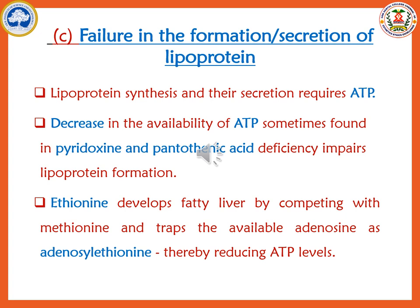Another reason for impaired VLDL synthesis is failure in lipoprotein formation or secretion. VLDL synthesis is an energy-dependent process requiring ATP. When ATP is deficient — mainly in conditions of pyridoxine and pantothenic acid deficiency — efficient VLDL cannot be produced, impairing lipoprotein formation. Also, ethionine can inhibit protein synthesis and competes with methionine, trapping available adenosine as adenosine-ethionine, making ATP unavailable for lipoprotein synthesis, so VLDL — very low density lipoprotein — will not be secreted.